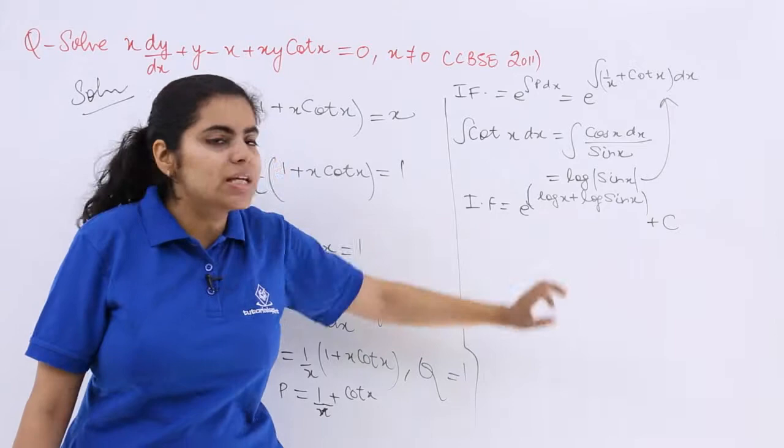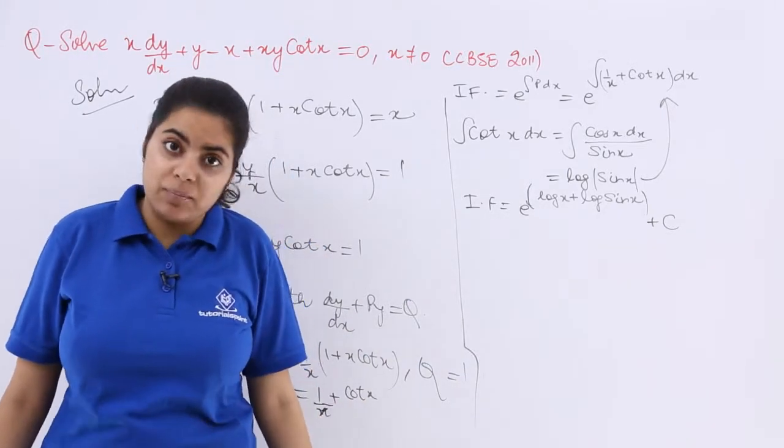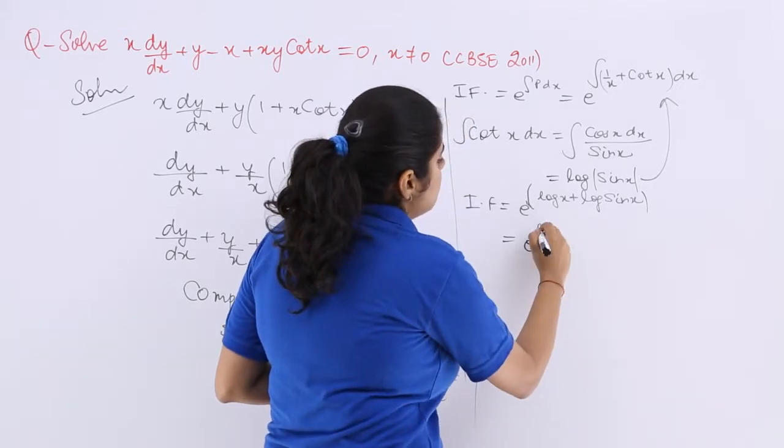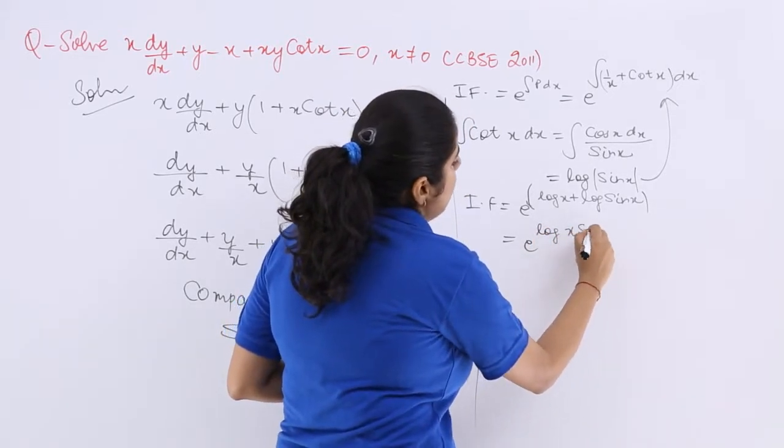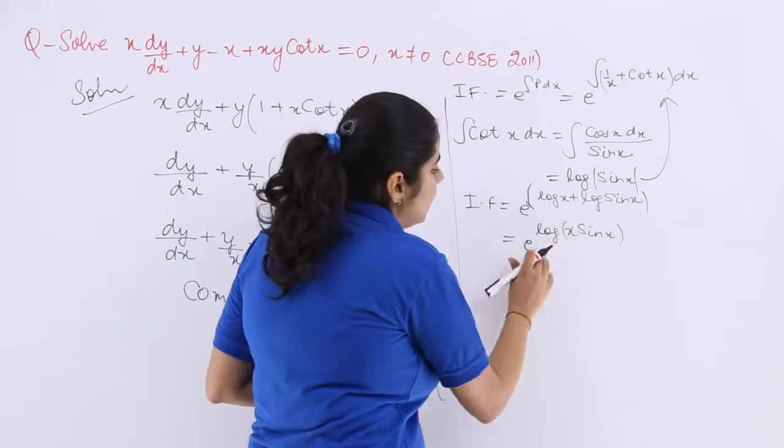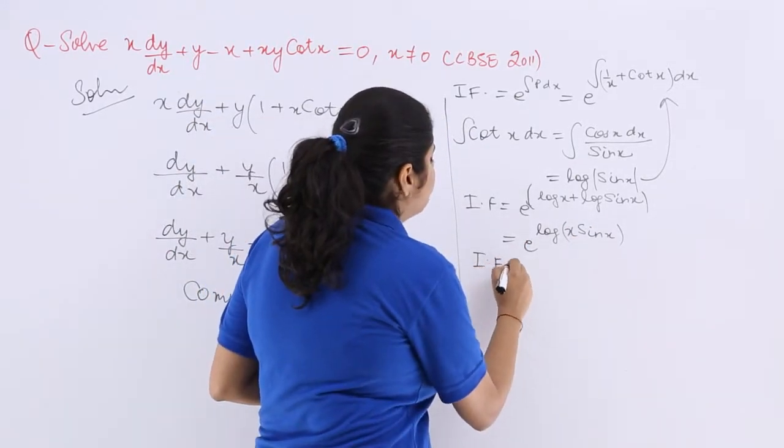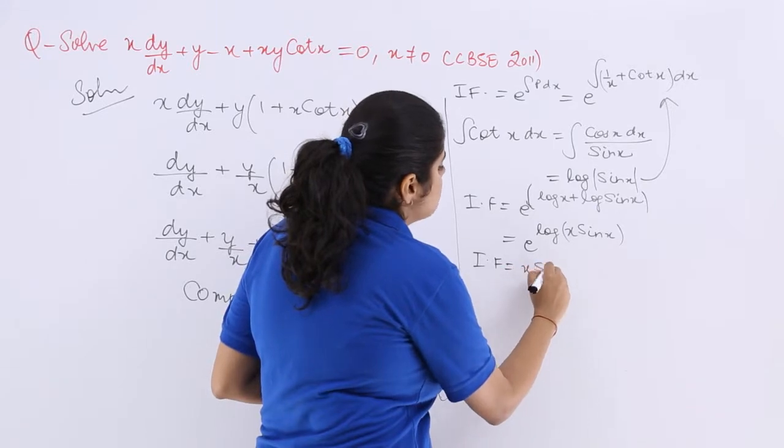Now one more thing please keep in mind. What is log m + log n? It is log mn. So that means this becomes e raised to the power log x sin x. And e and log basically nullify each other. So my integrating factor is very simple: x sin x.